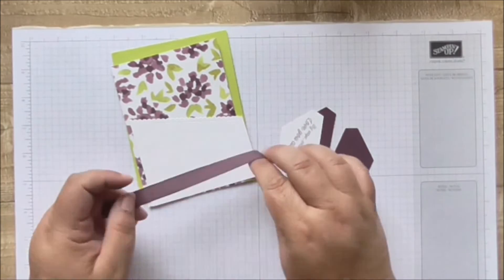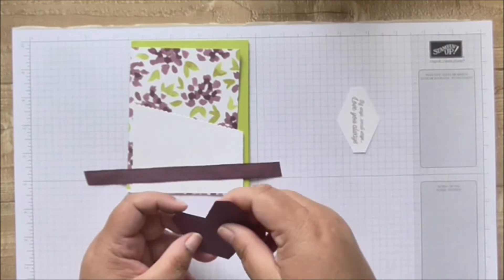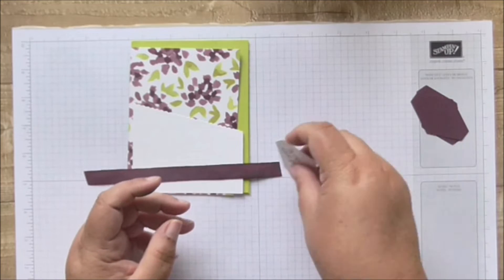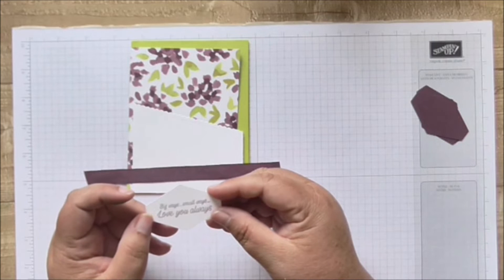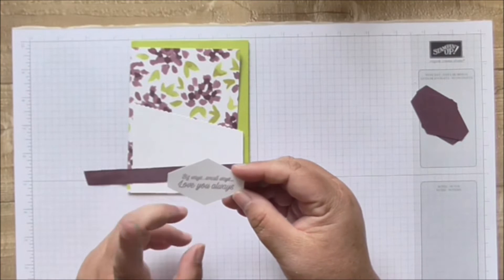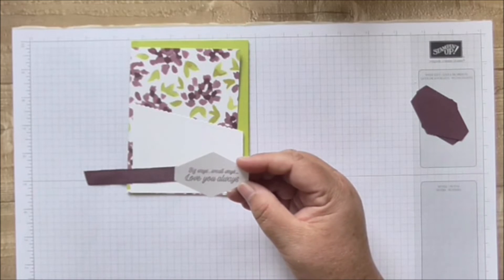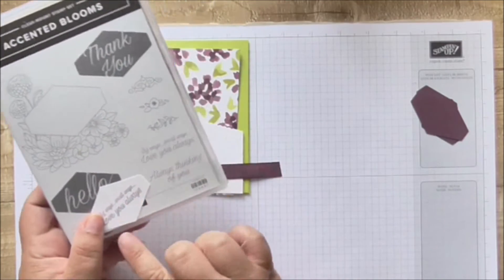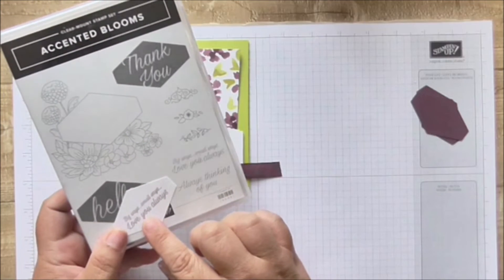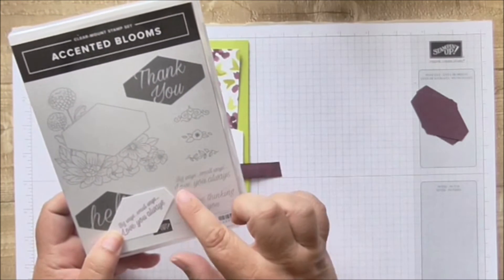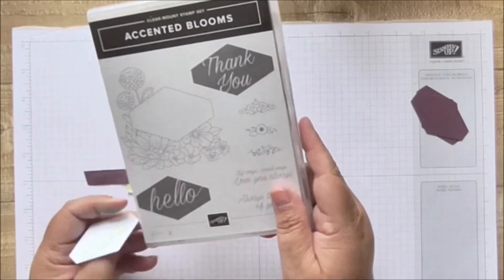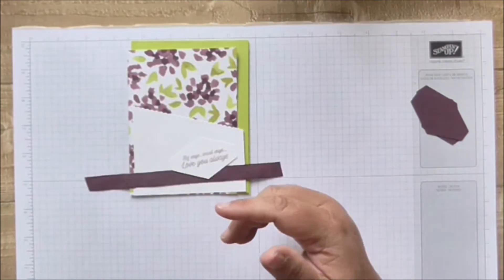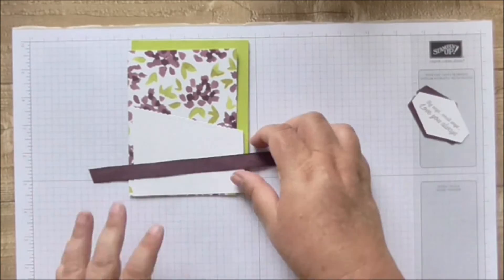So then I use fresh fig cardstock, some scraps, and I use the tailored tag punch to punch out two. Then I use the sentiment from accented blooms. I didn't want to use one of these big ones, I wanted it to be so that it could be used for anything really - it could be used for an anniversary card or a birthday card, a wedding or anything. Big ways small ways love you always, thought that was really cute. I stamped that in fresh fig onto white and stamped it with the punch again.